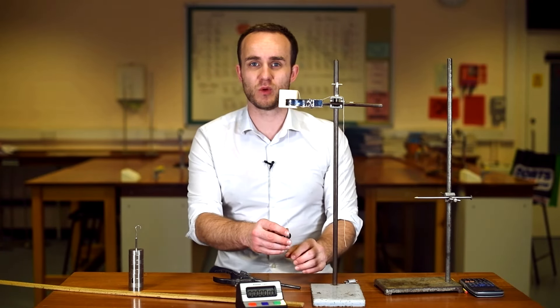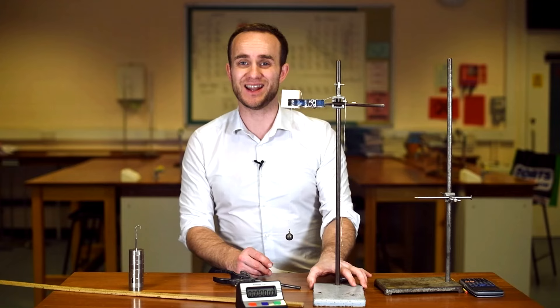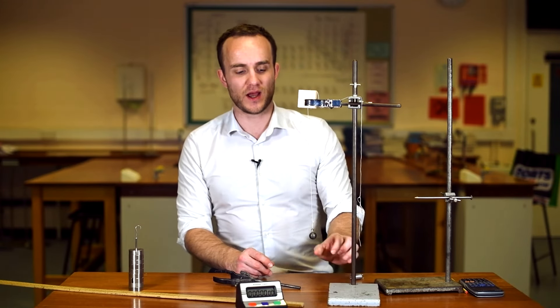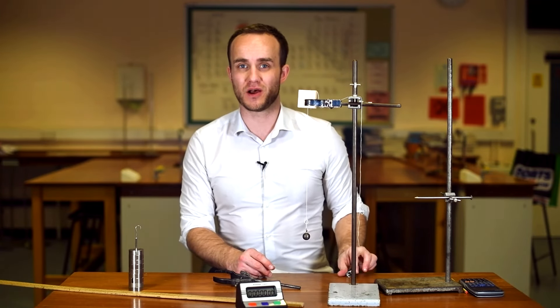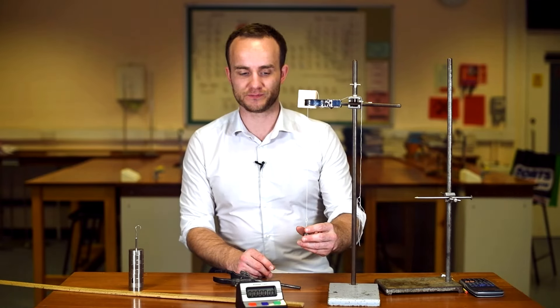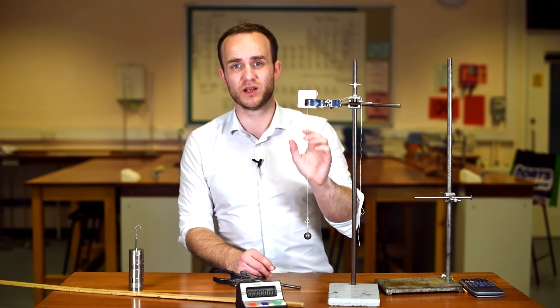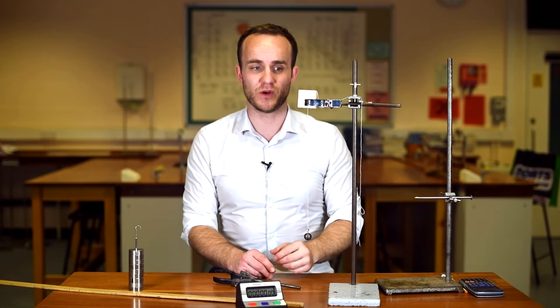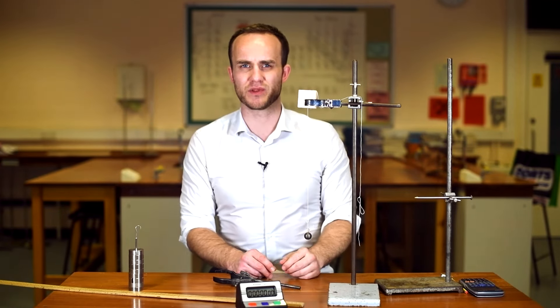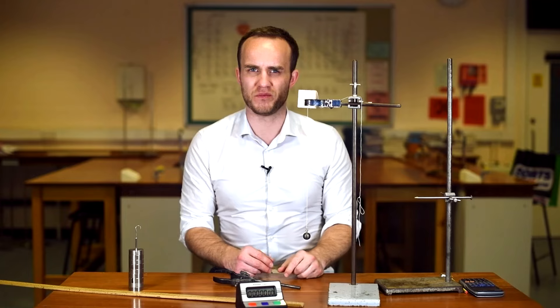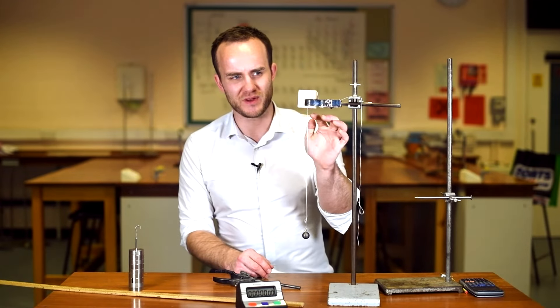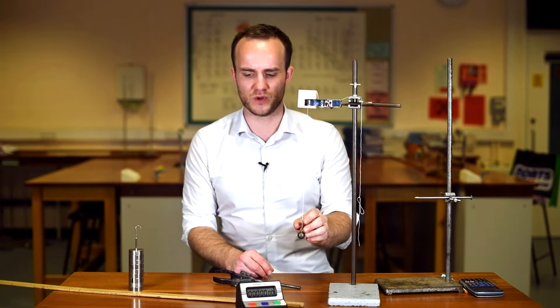With the pendulum, what we want to do is change the length of the string and then measure the time period of its oscillations. I've used a couple of pieces of wood to clamp the string in between, because if it was just hanging over something, the pivot wouldn't be fixed. So I can be sure that the pivot is right at the bottom of these pieces of wood.